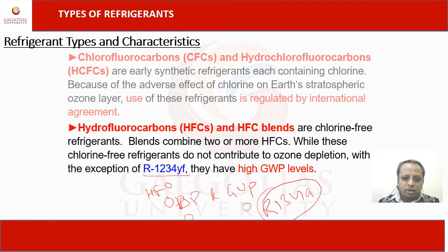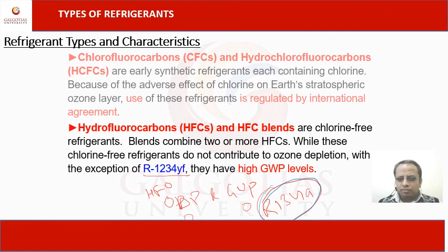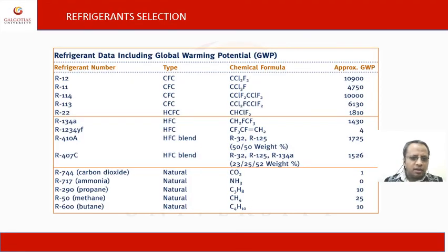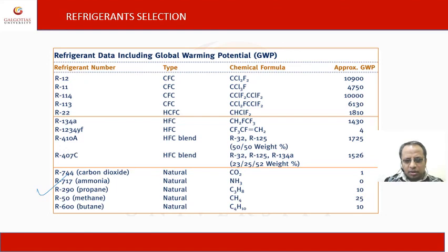R134A is currently the most eco-friendly refrigerant. HFO R1234YF is a future refrigerant under R&D and can replace R134A because R1234YF achieves zero ODP and zero GWP. HFO is a blending and mixture of natural refrigerants and HFC. In this table, we can see the environmental properties of various refrigerants — all natural refrigerants have zero or minimum GWP values. GWP is very important for the selection of a refrigerant for domestic and industrial purposes.